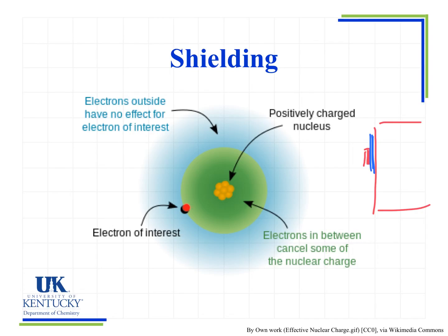When we look at the outer electron of interest, we're worried about the number of electrons inside it, because those cause shielding of the force — so this electron is not feeling the full force of the positively charged nucleus. The electrons outside the electron of interest have no effect on shielding, nor do electrons in the same energy level. We only worry about electrons in lower energy levels than the electron we're concerned with — not those in the same energy level or outside of it.